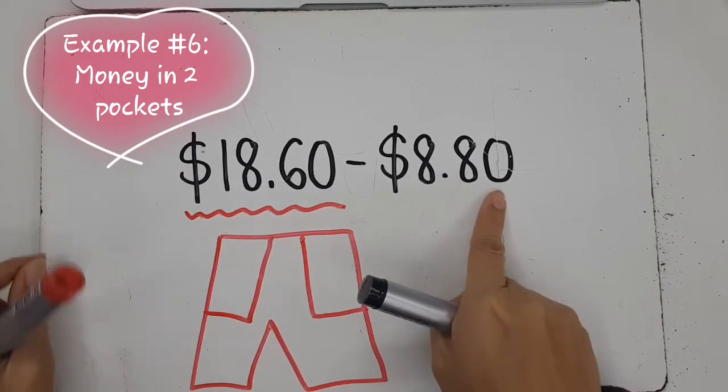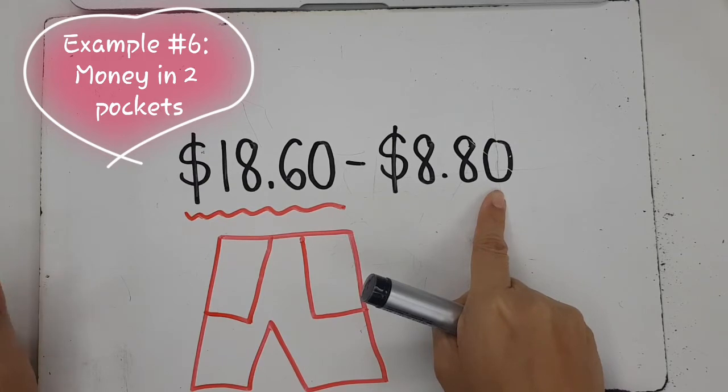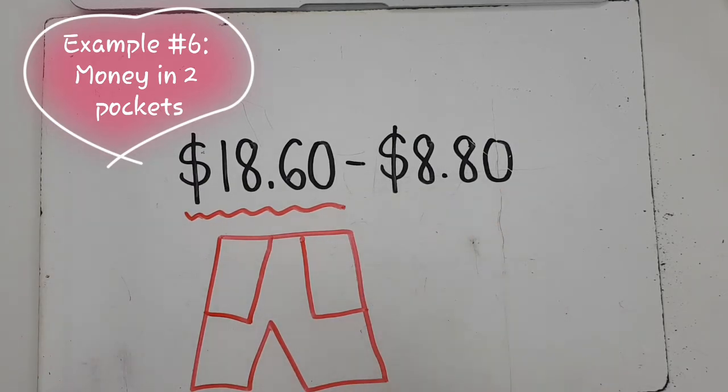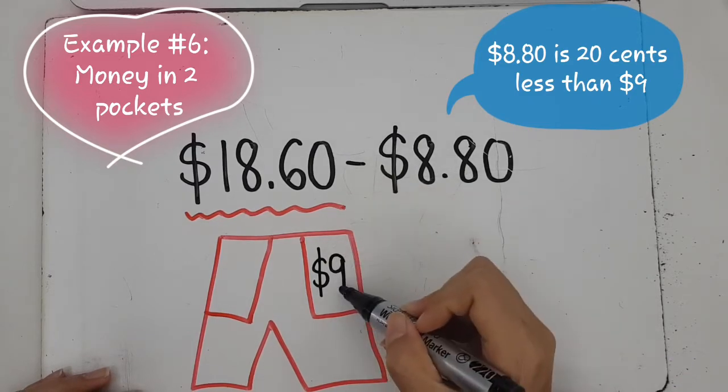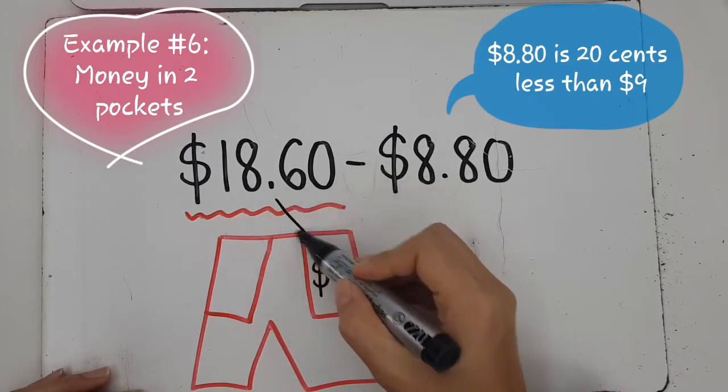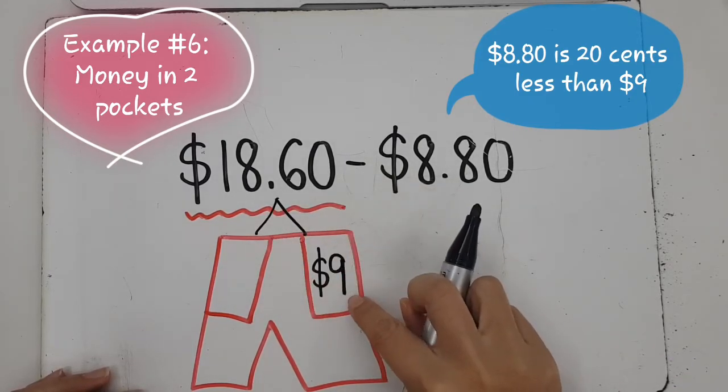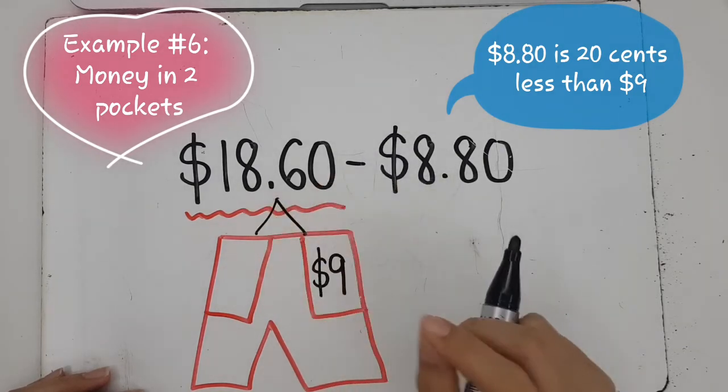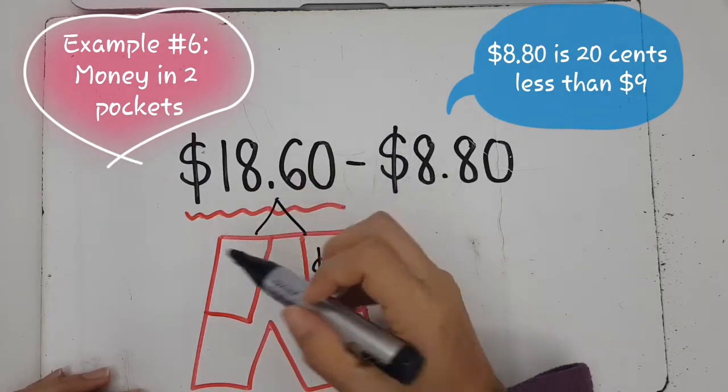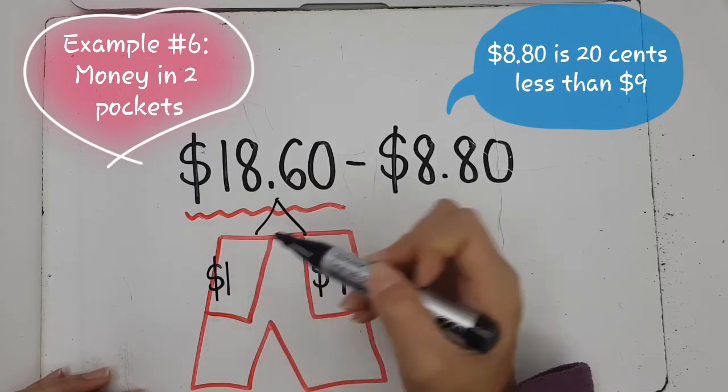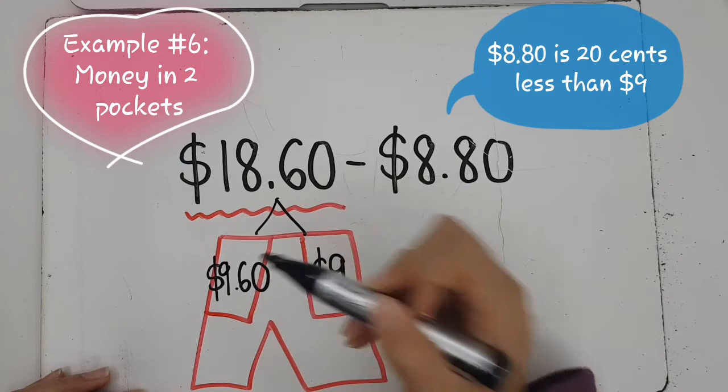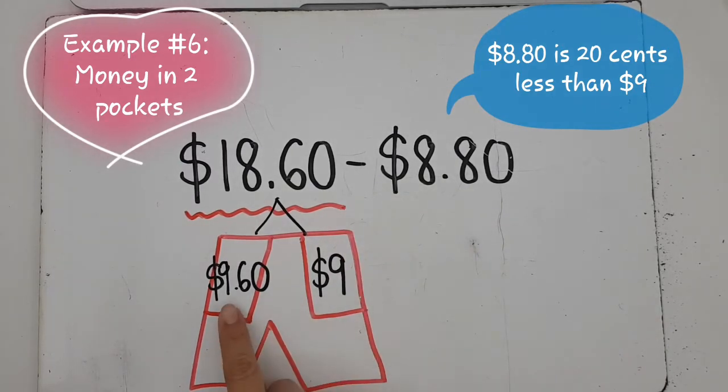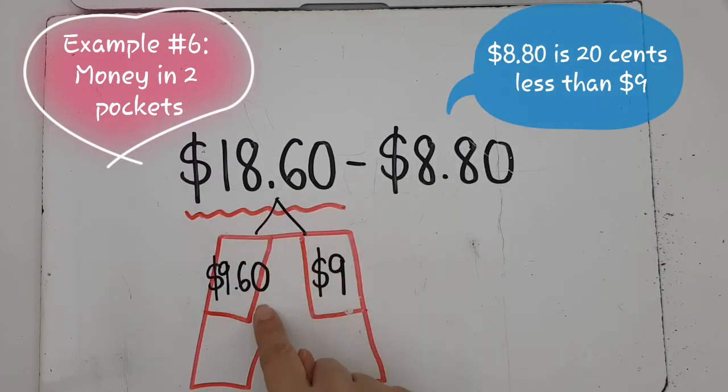I am going to put, now this is $8.80. What is close to $8.80? The closest is $9. So I am going to put $9 in this pocket. That means I am going to split this, right? If I put $9 in this pocket, that means I took away $9 from the dollars. $18 minus $9, how much do I put in this pocket? I will put $9.60 in that pocket. Now let's check. $9 plus $9 is $18.60.